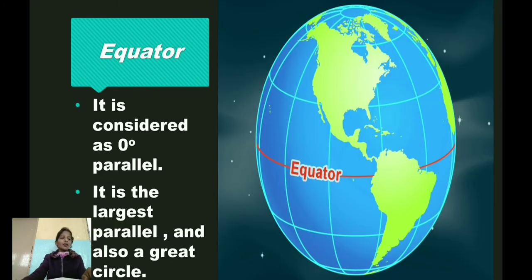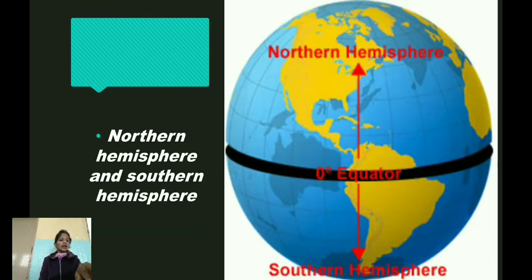Next, we will learn about the meaning of the term equator. The equator is considered as 0 degree parallel and also known as a great circle. The equator bisects the earth into north and south poles. The one to the north is called the northern hemisphere and the one to the south is called the southern hemisphere.